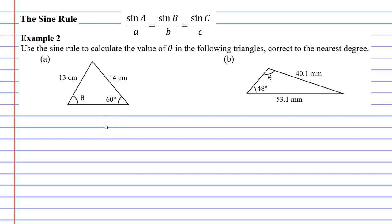In this video we're going to complete example 2. We're going to use the sine rule again to calculate the value of θ in the following triangles, correct to the nearest degree. There is a very good reason that we're doing two examples here, and you will see what I mean when we get into question B. You'll also notice that our formula has flipped — instead of a over sine A, it's sine A over a, because we're trying to find angles this time.